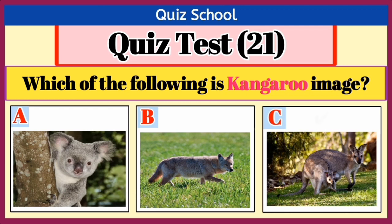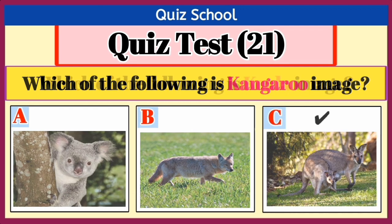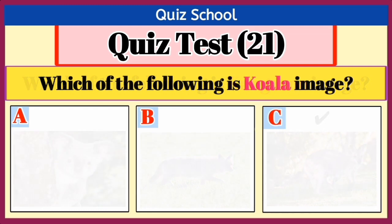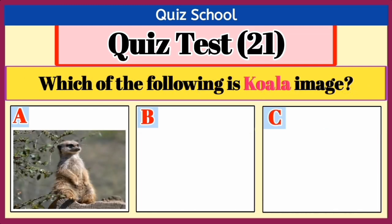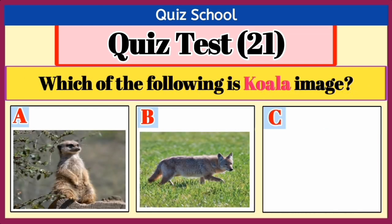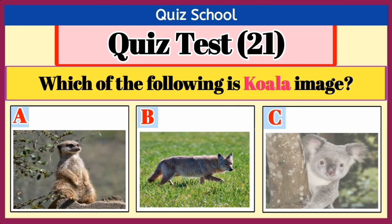Question number 13. Which of the following is the quaila image? Option A, Option B, or Option C. Right answer is Option C.